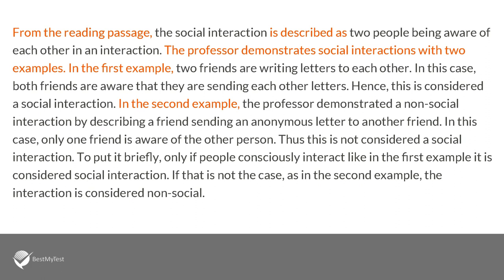In the second example, the professor demonstrates a non-social interaction by describing a friend sending an anonymous letter to another friend. In this case, only one friend is aware of the other person. Thus, this is not considered a social interaction. To put it briefly, only if people consciously interact, like in the first example, it is considered social interaction. If that's not the case, as in the second example, the interaction is considered non-social.